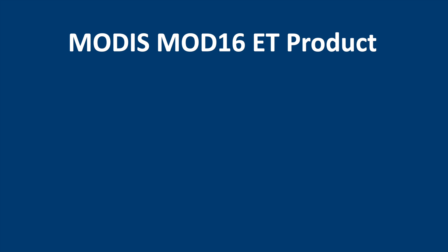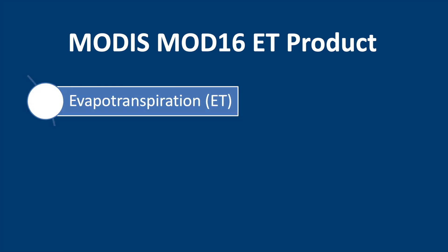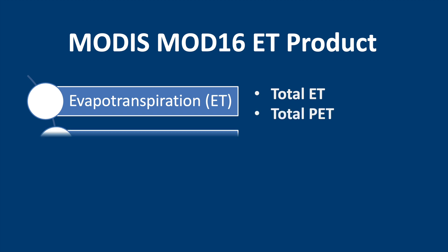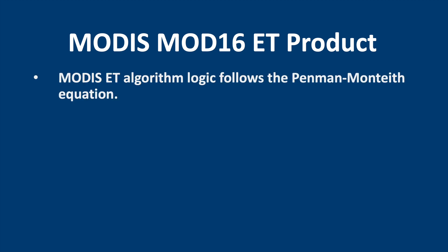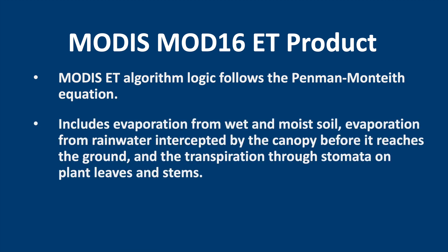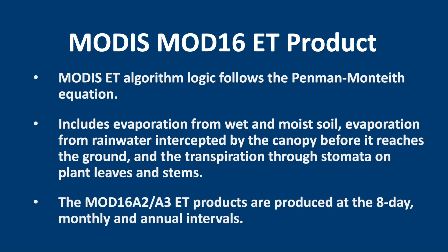The MOD16 product includes the following: total evapotranspiration, total potential evapotranspiration, latent heat flux, and some quality control flags. The algorithm is based on the Penman-Monteith equation. This is the same equation which the FAO uses in their crop water demand calculations. Evaporation is estimated from soils, intercepted rainfall, and transpiration. The data is available at 8-day, monthly, and annual intervals.